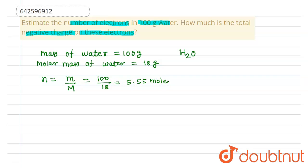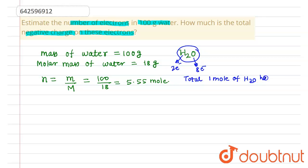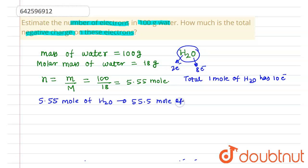As we know, hydrogen has one electron, so H₂O has two electrons from hydrogen, and oxygen has eight electrons. Therefore, one molecule of H₂O has a total of 10 electrons, and one mole of H₂O has 10 moles of electrons.